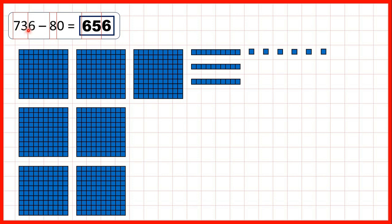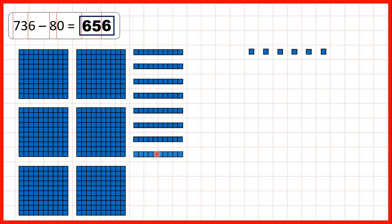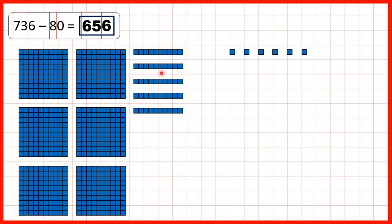Now 736 minus 80. We need to subtract eight tens, but we only have three tens. So we need to exchange one hundred for ten more tens. Then we can take away 8 tens, and that leaves us with six hundreds and five tens, because we exchanged one hundred. The number of ones has, of course, stayed the same.